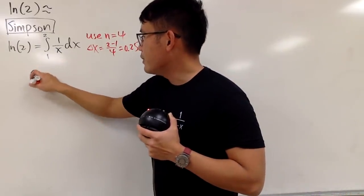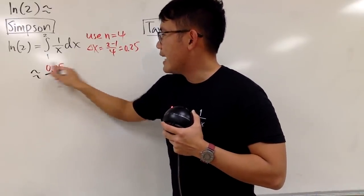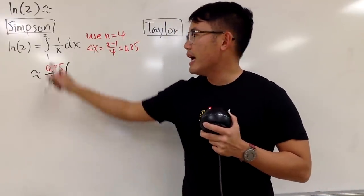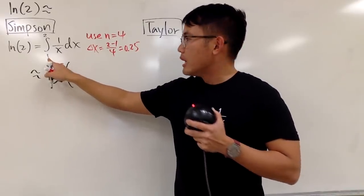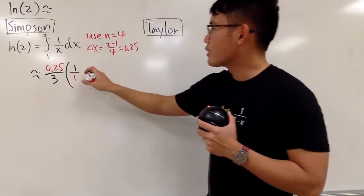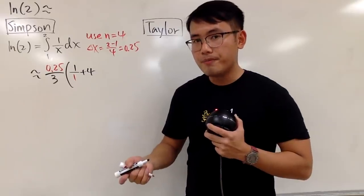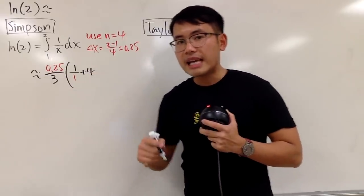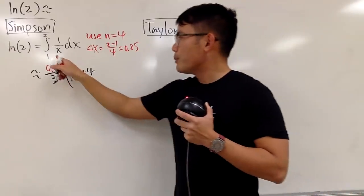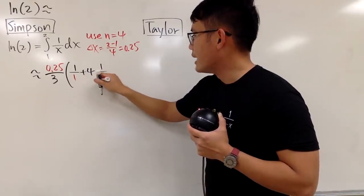By Simpson's rule, this is approximately delta x over 3, which is 0.25 divided by 3, multiplied by the value of the function at the first x value, x=1, giving 1/1. Next, we add 4 times the value of the function at the next x value, which is 1 plus delta x, namely 1.25, so we have 4 times 1/1.25.